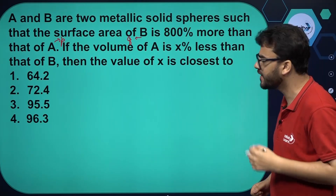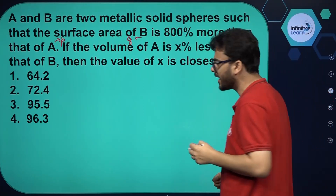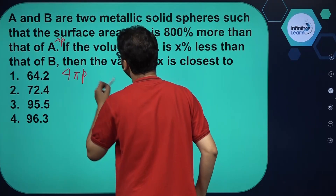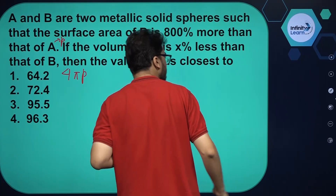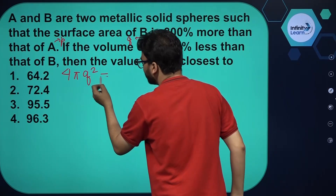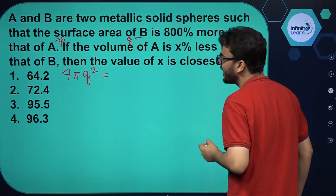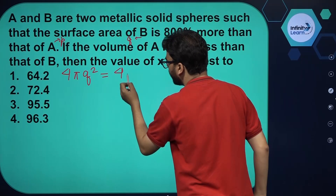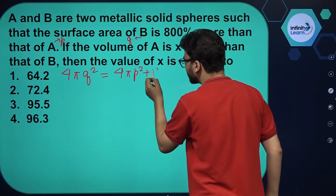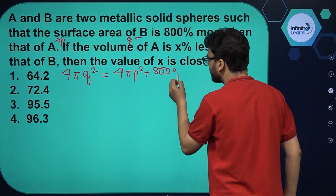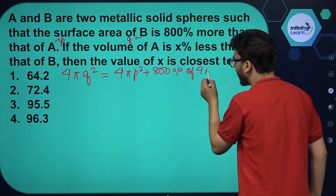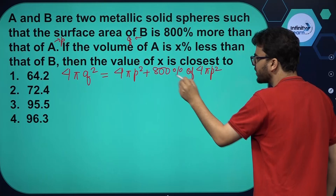The surface area of sphere B will be 4πQ², and that is equal to the surface area of A, which is 4πP², plus 800% of it. So 800% of 4πP². This is the situation given in the question.